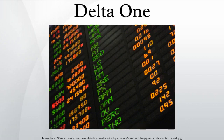Delta-1 products are financial derivatives that have no optionality and as such have a delta of 1, meaning that for a given instantaneous move in the price of the underlying asset there is expected to be an identical move in the price of the derivative.